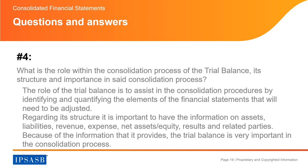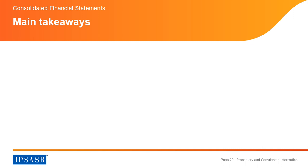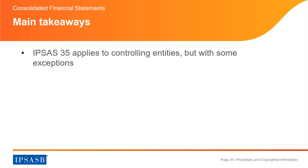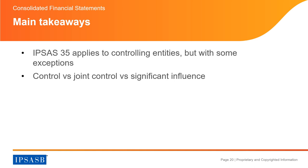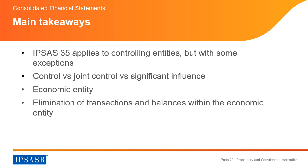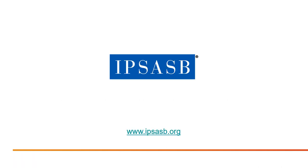The main takeaways of this webinar are: IPSAS 35 applies to controlling entities, but with some exceptions; it is important to distinguish control from joint control from significant influence in the type of interests in other entities; the economic entity includes the controlling entity and the controlled entities; eliminate all transactions and balances within the economic entity; and adjust the accounting policies of the controlled entity to conform with those of the controlling entity. Thank you for viewing this webinar. For further information, please visit our webpage at www.ipsasb.org. Goodbye!